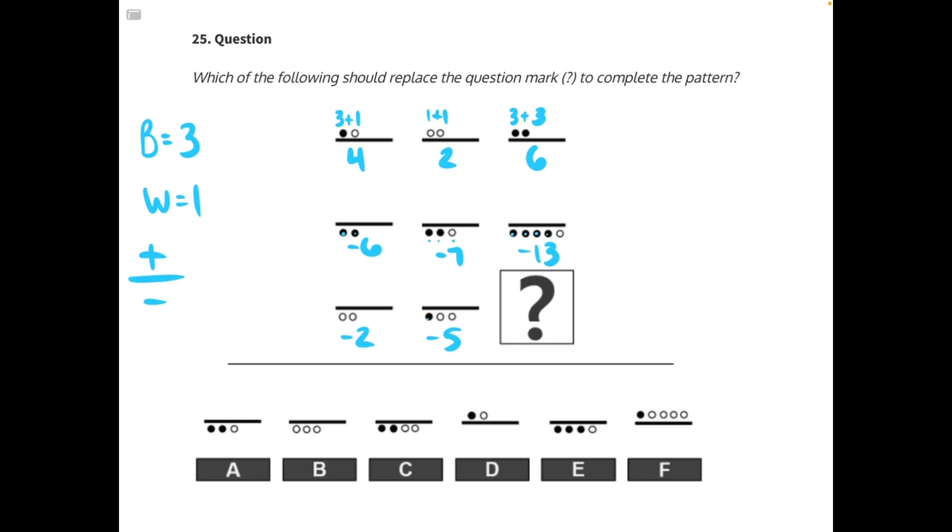we need to either add vertically in our third column or add horizontally in our third row. 6 plus negative 13, which would give us negative 7, or negative 2 plus negative 5, which would also give us negative 7. So we need to look for an answer choice that represents the number negative 7.